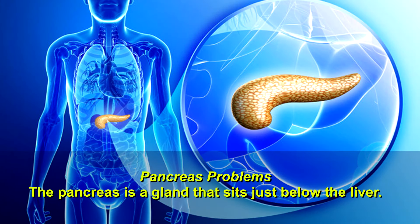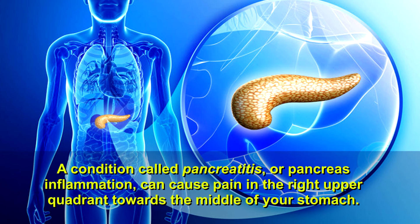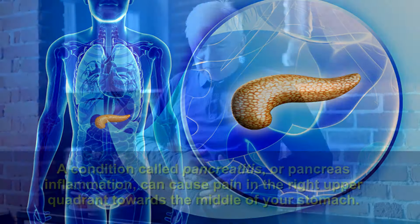Pancreas problems can also be a cause. The pancreas is a gland that sits just below the liver. A condition called pancreatitis, or pancreas inflammation, can cause pain in the upper right quadrant towards the middle of your stomach.